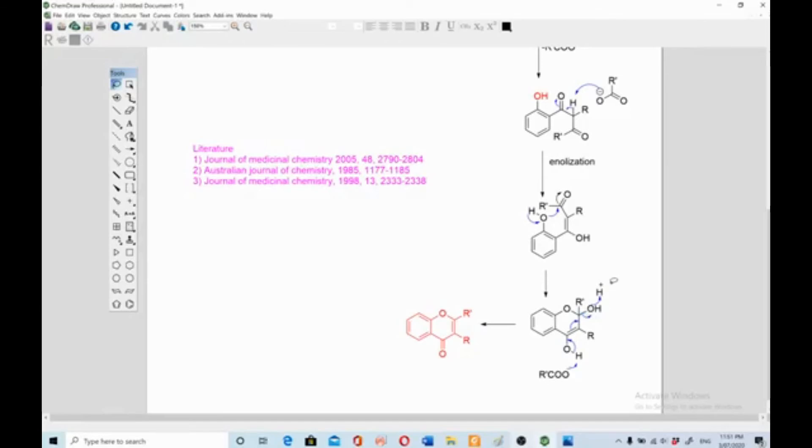You get your desired product. This was the reaction and mechanism of Allan Robinson condensation. Now lastly, I will discuss the key point that this reaction is very useful in terms of research or if you are doing a PhD research or master's research. You can use this reaction and publish in some quality journals.